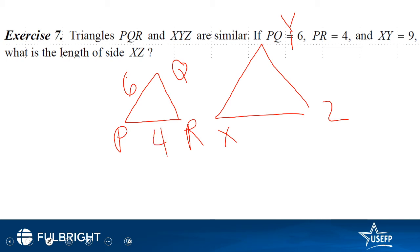So PQ is 6, PR is 4, XY is 9, and XZ is unknown, let's say it is a. So we need to take ratios of two similar sides, right? So a divided by 9 equals 4 divided by 6. So this comes out to be a equals 6. So length of XZ equals 6.